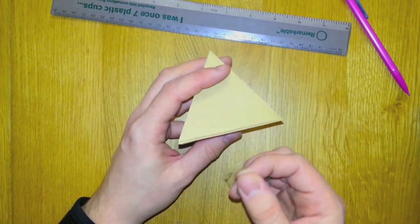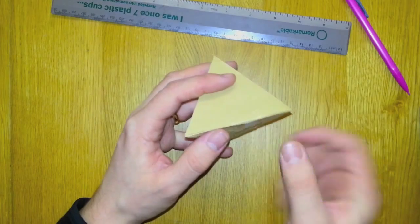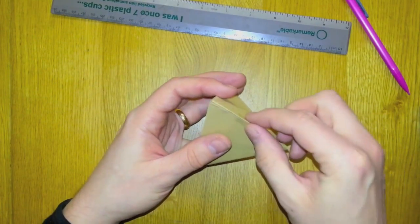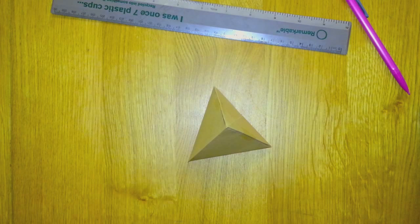Neaten it up. Take two pieces of tape and carefully tape the open edges to make it as secure as possible. And there you have it, an envelope tetrahedron.